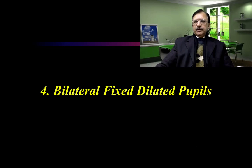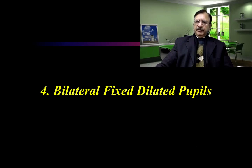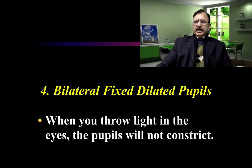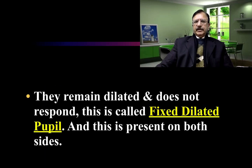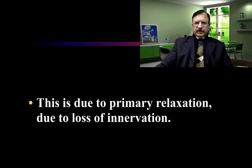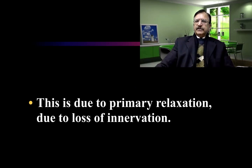Fixed dilated pupils occur due to loss of nerve supply. The pupils will not constrict when light is shone into them; they become fixed. Bilateral fixed dilated pupils are also a sign of death. When you throw light in the eyes the pupil will not constrict — they remain dilated and do not respond. This is present on both sides and is due to primary relaxation from loss of innervation.